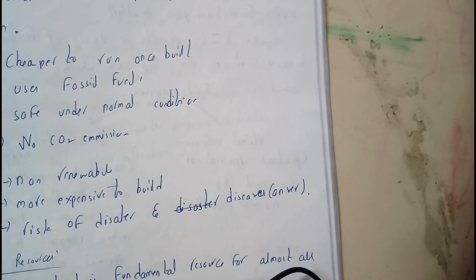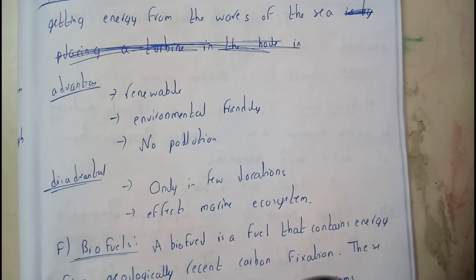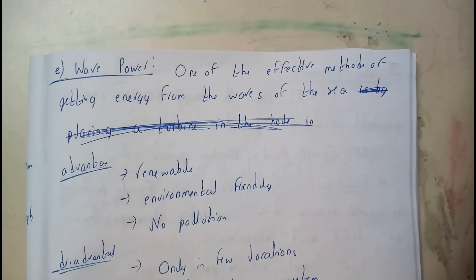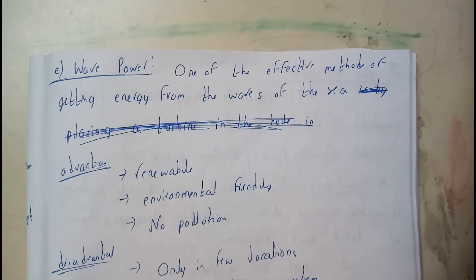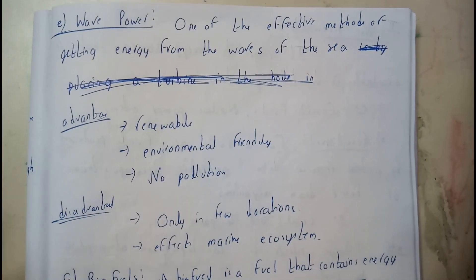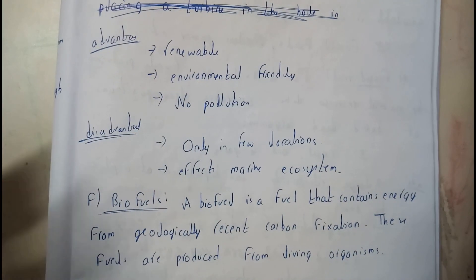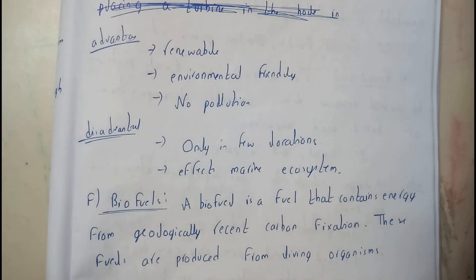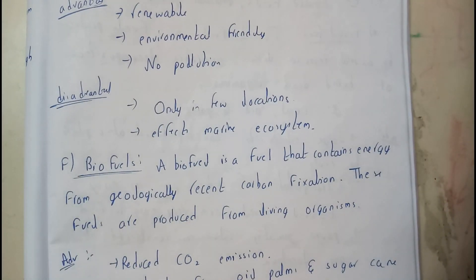Another example is wave power, which is similar to tidal power. It is also produced by seas or oceans due to their currents and is one of the most efficient methods of getting energy from ocean waves. Advantages: it is renewable and environmentally friendly with no pollution. Disadvantages: it is only viable in a few locations where currents are frequent, and it significantly affects the marine ecosystem.